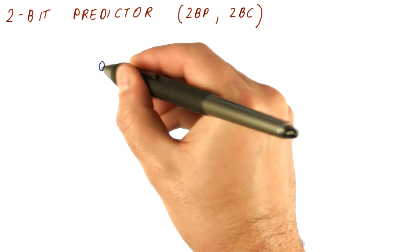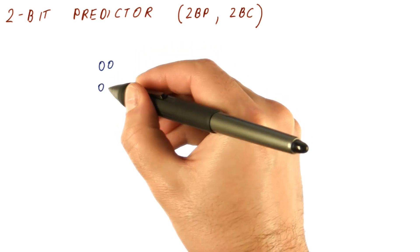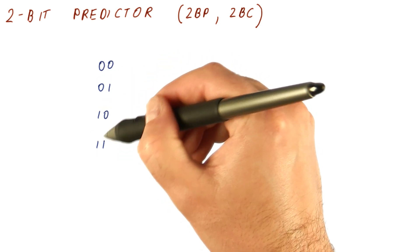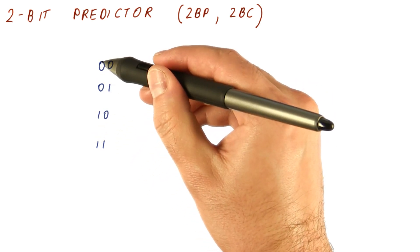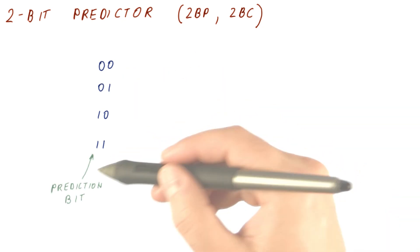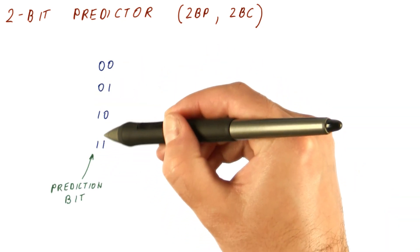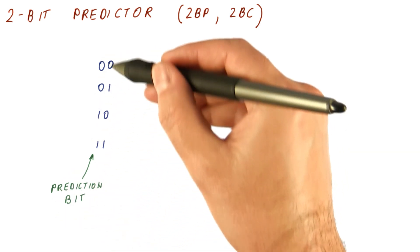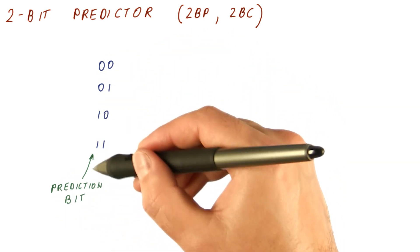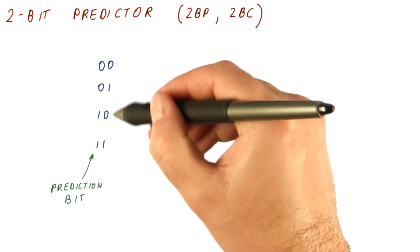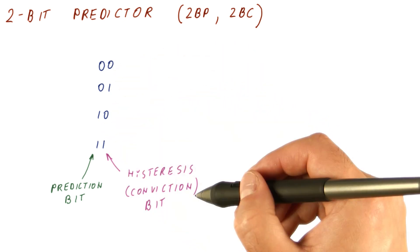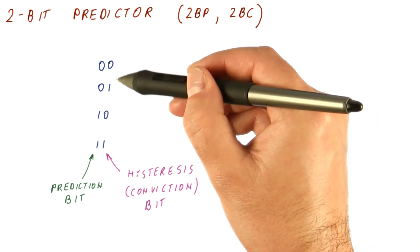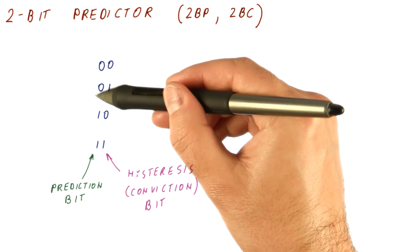The two-bit predictor has possible values 00, 01, 10, and 11. The more significant bit tells us what the prediction should be — this is called the prediction bit, and it functions similarly to the one-bit predictor. The lower bit is called the hysteresis or conviction bit, and it tells us how sure we are that we should be predicting what the prediction bit says.